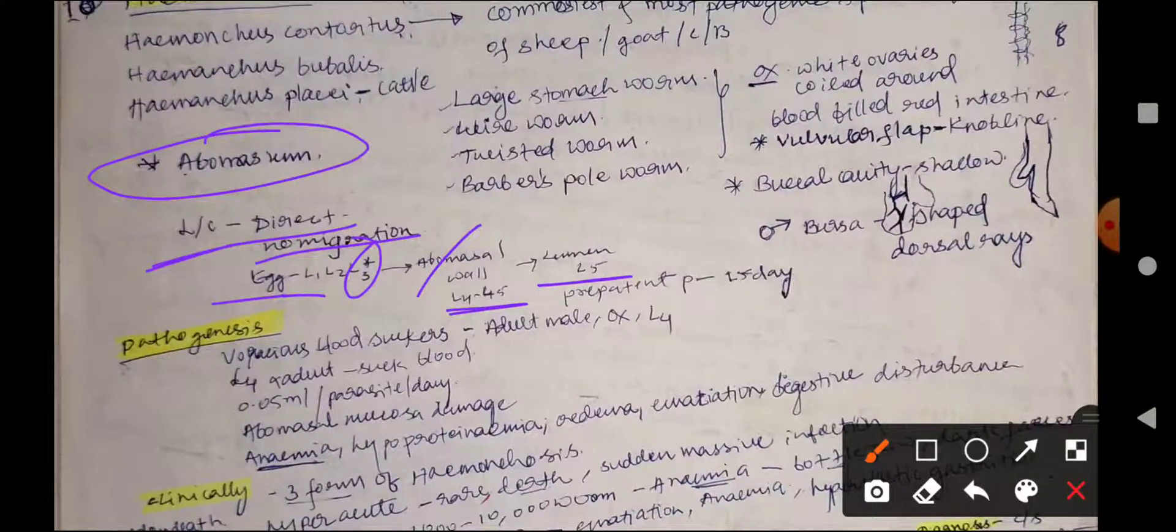The prepatent period for Haemonchus species is around 15 days.